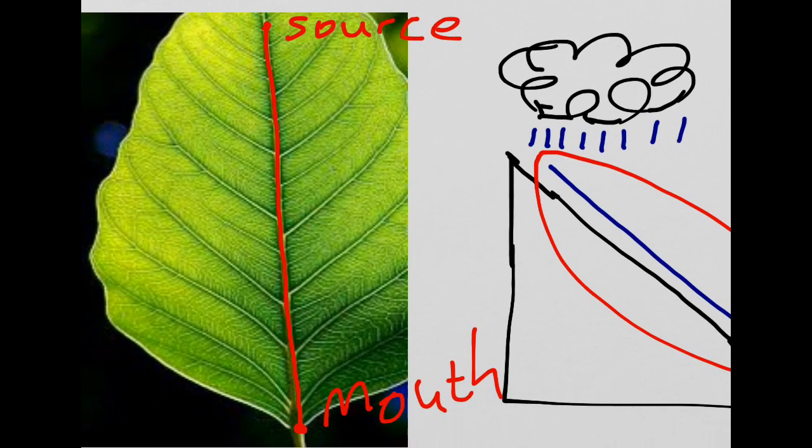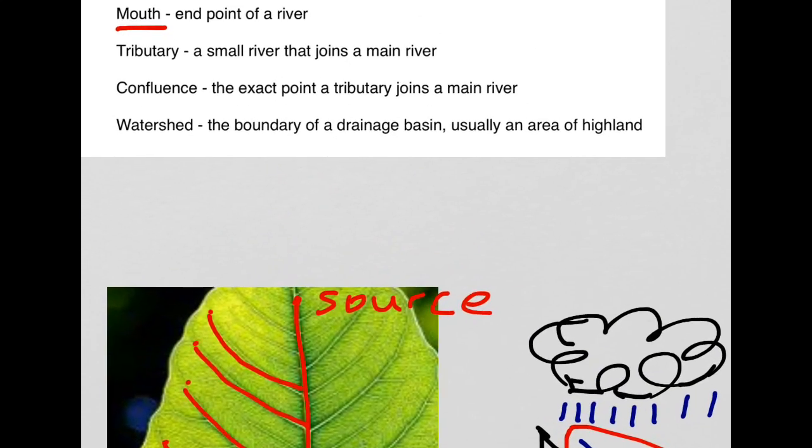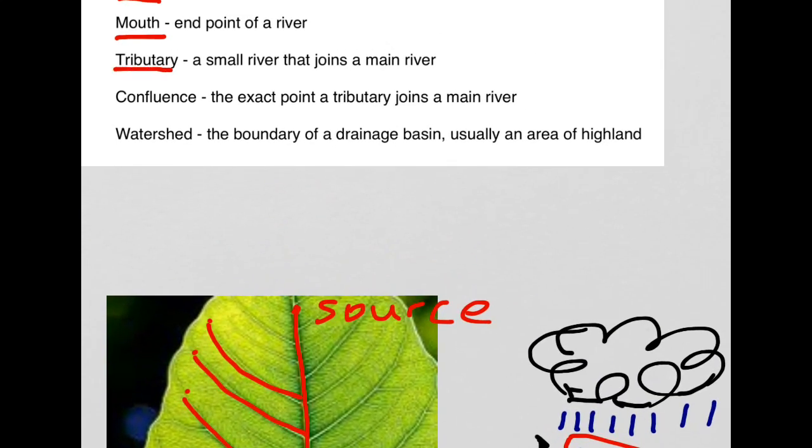There is more than one source available on this diagram. The red dots highlight additional small sources for the side rivers. These side rivers drain the land and feed into the main river channel. These small side rivers are called tributaries, a small river that joins a main river.